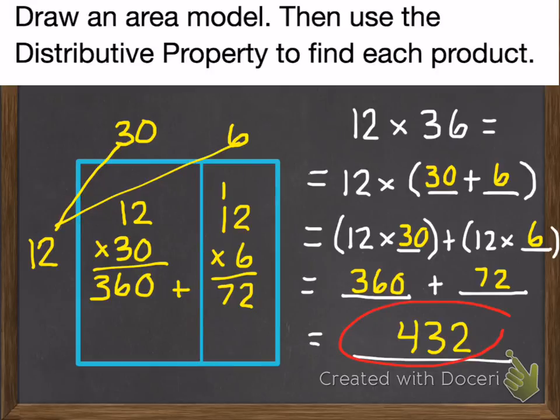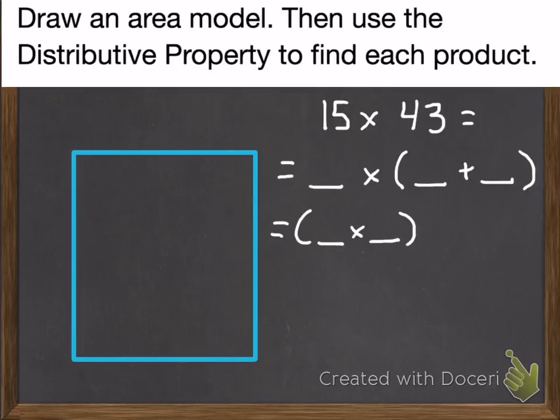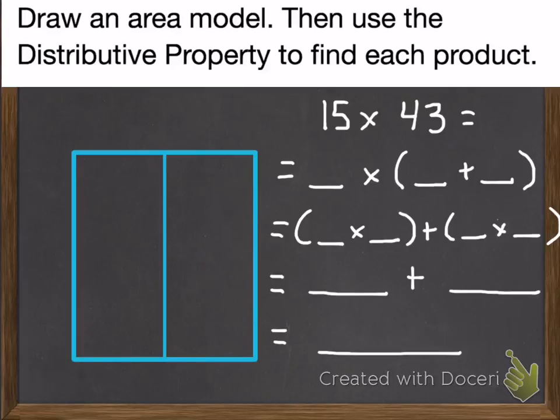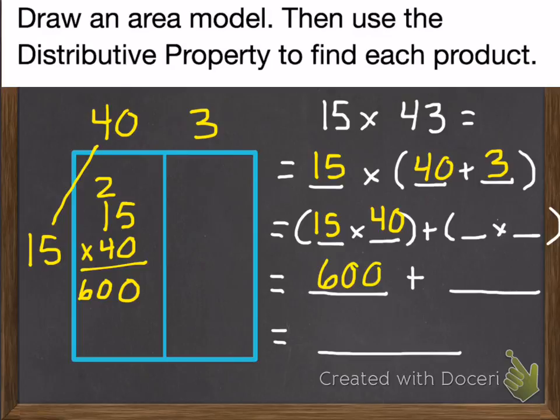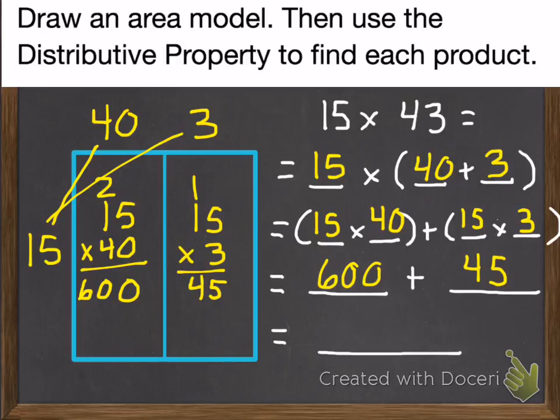Okay, next problem. Practice problem number 2 is 15 times 43. This time I have it filled out for you, but no blanks are filled in, but I still have them there to help guide you a little bit. So go ahead and pause. Okay, the 15 stays the same. We break apart the 43 into 40 and 3. Put that on our area model. Then we multiply the 15 times 40, which is 600. Then we need to multiply the 15 times the 3, which is 45. 600 plus 45 is 645.